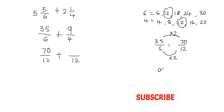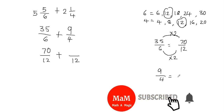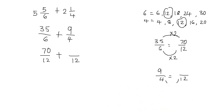Now I need to do the same process for the second fraction. I want my denominator to be 12. What do I multiply 4 by to make it 12? I can multiply it by 3. If I multiply my denominator by 3, I also have to multiply my numerator by 3 to balance the fraction. 9 times 3 equals 27. So 9 fourths is equal to 27 over 12. These are equivalent fractions, and I can replace 9 fourths with 27 over 12.